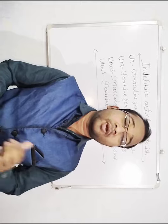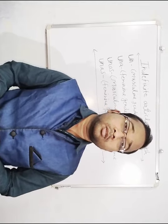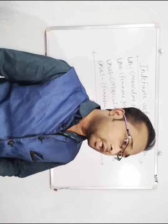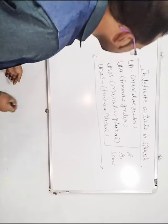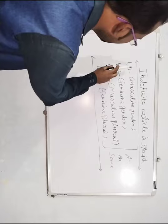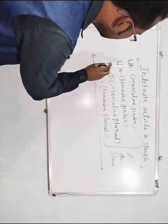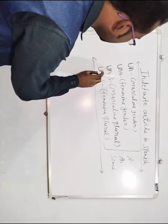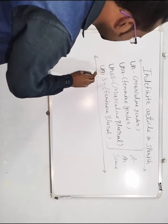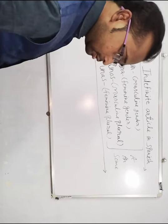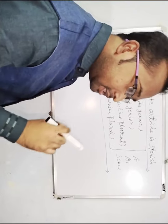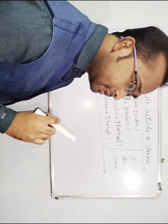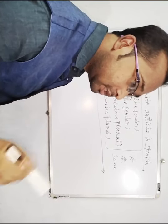Are you excited to know about this? Ok, don't worry, I would like to explain you. Un, Una, Unos, Unas — these are the indefinite articles in Spanish language.